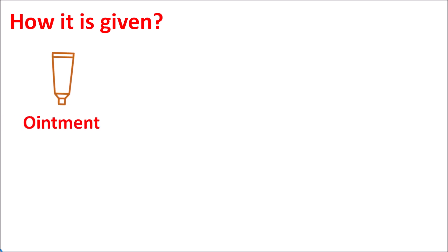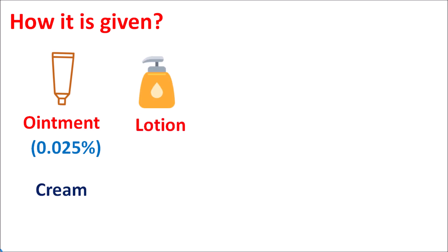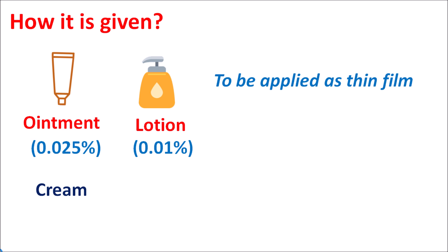Fluocinolone acetonide is available as ointment at a strength of 0.025 percent. It is also available as cream, and even as a lotion at a strength of 0.01 percent. This drug should be applied as a thin film on the affected area and can be applied around two to four times daily. A low dose of the drug should be used in order to reduce the systemic absorption. In conditions like psoriasis, occlusive dressings can be used, but in other skin inflammatory disorders occlusive dressings are not preferred, as they increase the systemic absorption. In children, this drug should be carefully used to prevent systemic exposure and suppression of the HPA axis.